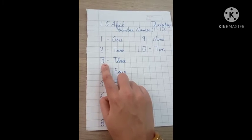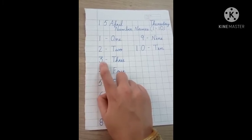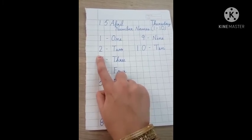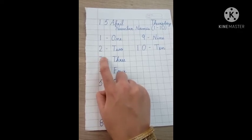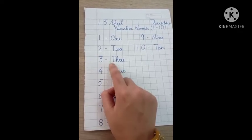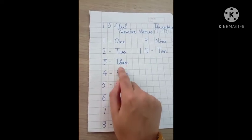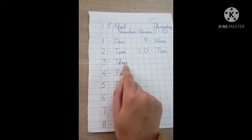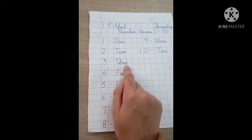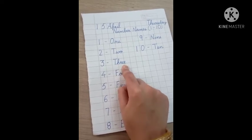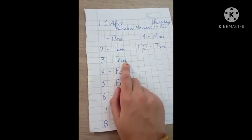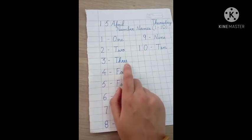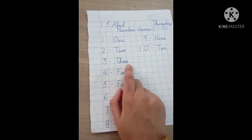Then 3. See the formation of 3? Theek hai? Sab se pehle, sleeping line. Then slanting line. Go back and make a curve. T, H, R, double E, three. T capital, H small, R small, E small, E small. When two letters are repeated, they are two times. Then what we say? Double. T, H, R, double E. Double E, three. T, H, R, double E, three.